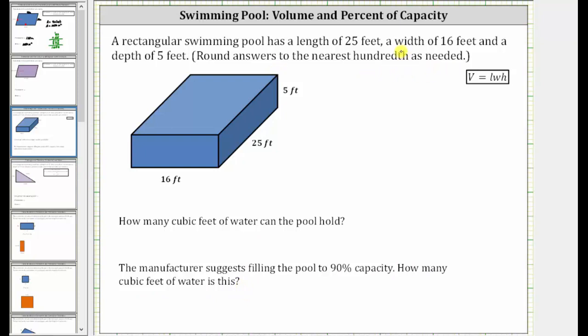The pool is like a big box or a right rectangular prism as shown here where the length is 25 feet, the width is 16 feet, and the height is five feet.